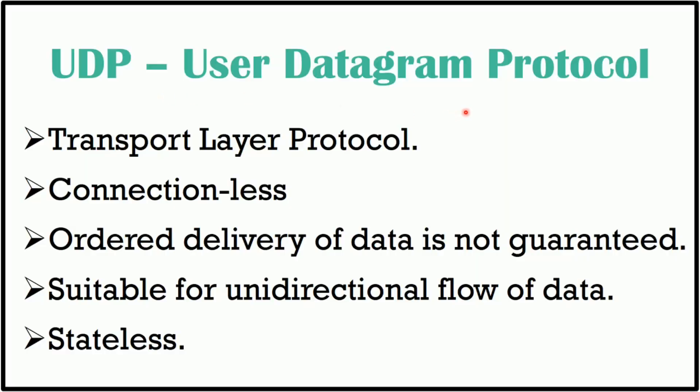The User Datagram Protocol (UDP) is the simplest transport layer communication protocol available in the TCP/IP protocol suite. It involves a minimum amount of communication mechanism. UDP is said to be an unreliable transport protocol, but it uses IP services which provide a best-effort delivery mechanism. In UDP, the receiver does not generate an acknowledgement of packet received, and in turn the sender does not wait for any acknowledgement of packet sent.